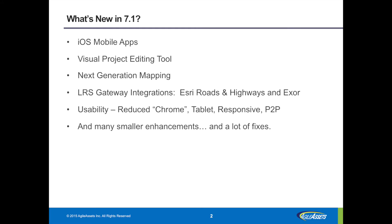We've consolidated a lot of things and simplified, making it much easier for a map user to get in. For example, reporting and mapping are now tied together in one place. You can build a map, click print, and print what you're viewing on screen — a what-you-see-is-what-you-get kind of experience. We've also got enhanced integrations with Esri Roads and Highways and with Exor coming through the LRS gateway.